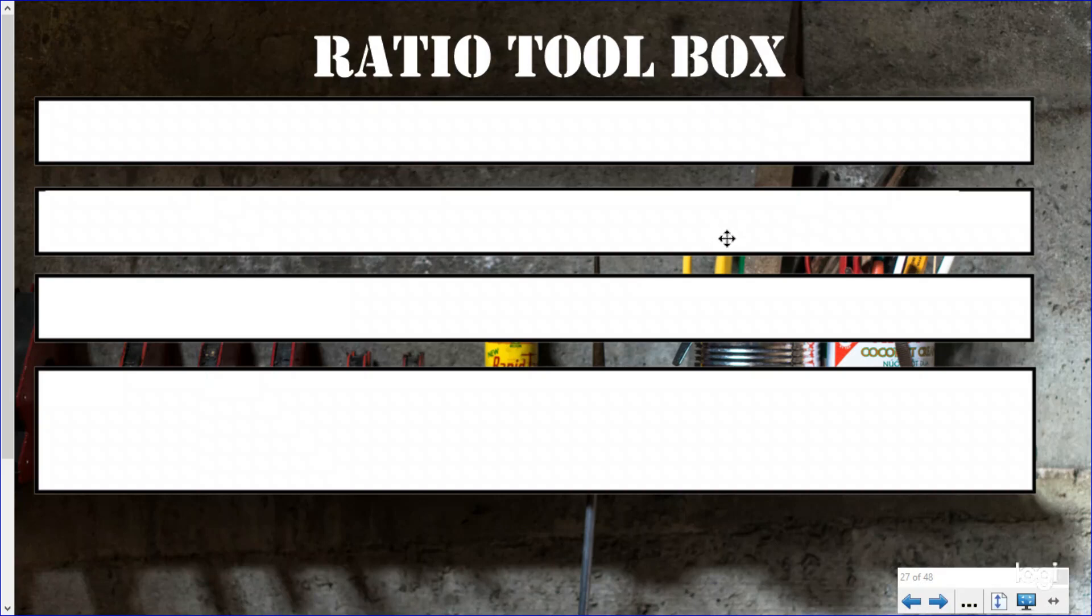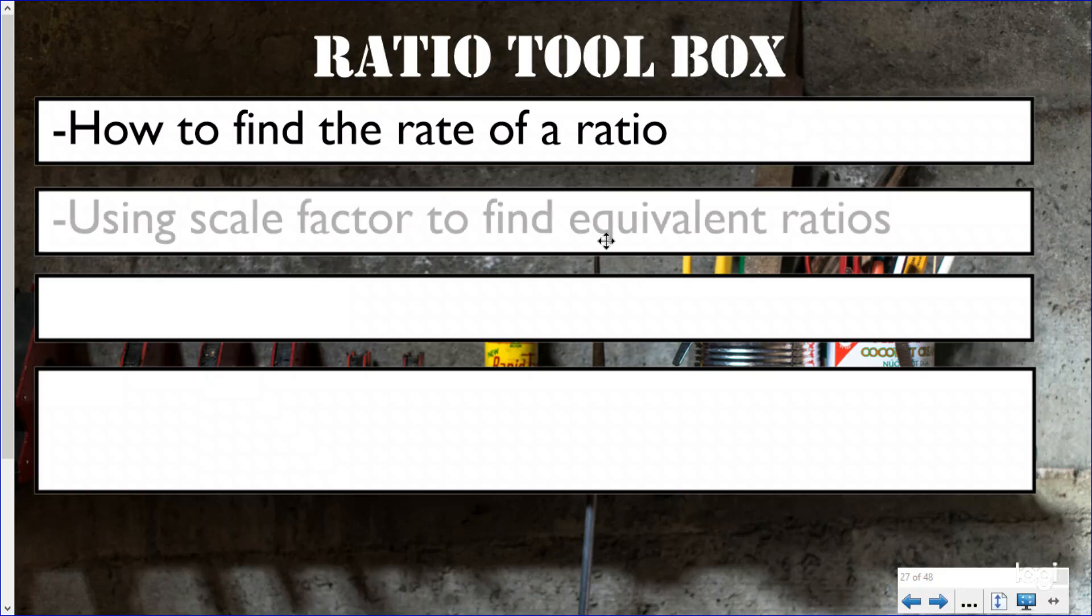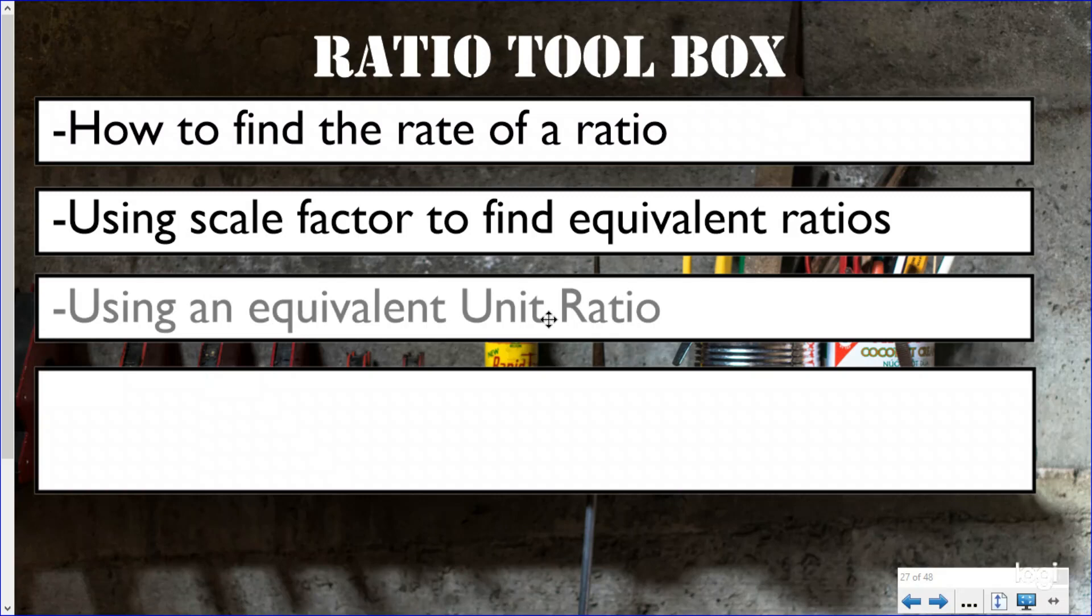Just like every car mechanic has a toolbox with different types of tools for different jobs, you have a ratio toolbox of things you've learned in this playlist that you can pull out anytime you need to help you find an answer to a ratio question. First, we know how to find the rate of a ratio. Remember that a rate is when we are comparing the different quantities within a ratio. We also have been studying how to use a scale factor to find equivalent ratios. And we also know how to use an equivalent unit ratio, which we learned about last lesson.